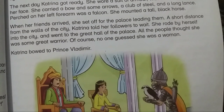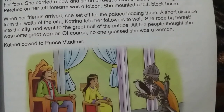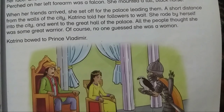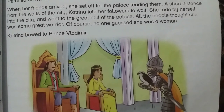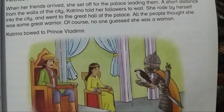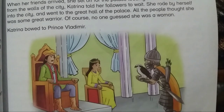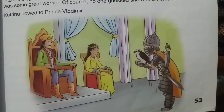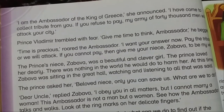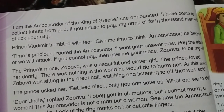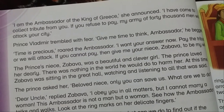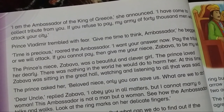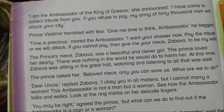A short distance from the walls of the city, Katerina told her followers to wait. She rode by herself into the city and went to the great hall of the palace. All the people thought she was some great warrior — of course, no one guessed she was a woman. Katerina bowed to Prince Vladimir. 'I am the ambassador of the king of Greece,' she announced.